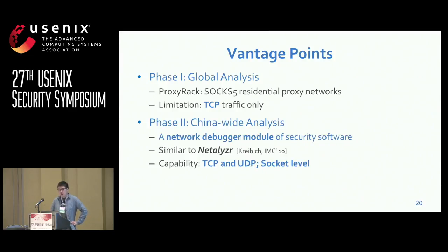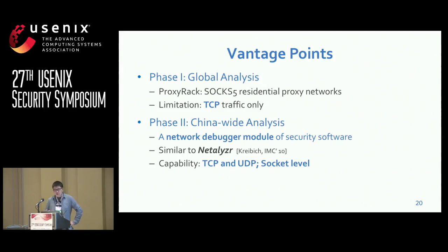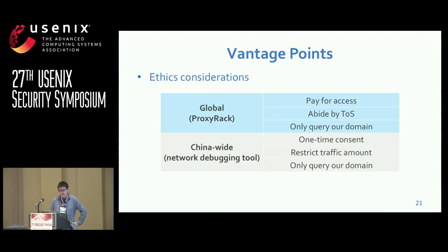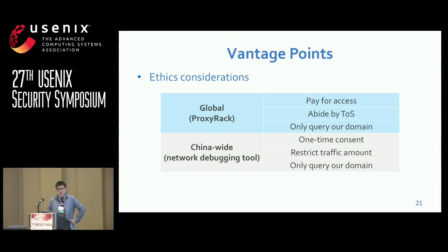To get more fine-grained data, we design another phase of measurement. Here, we implement our measurement script into a network debugging module of a popular security software. The debugging module is quite similar to Netlizer and allows us to generate traffic at the socket level, so we can send more diverse DNS packets from these vantage points. Our collected clients are mainly located in China, so this phase is named China-wide analysis. In our study, we take utmost care to protect users' privacy and security. We use follow-up approaches to get granted permission from clients, like one-time consent and install from a user. Only DNS queries of our domain are collected without any privacy data.